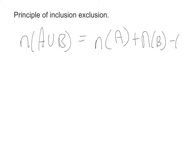I'd like to talk about the principle of inclusion and exclusion. The number of elements in A or B equals the number of elements in A plus the number of elements in B minus the number of elements in A and B.